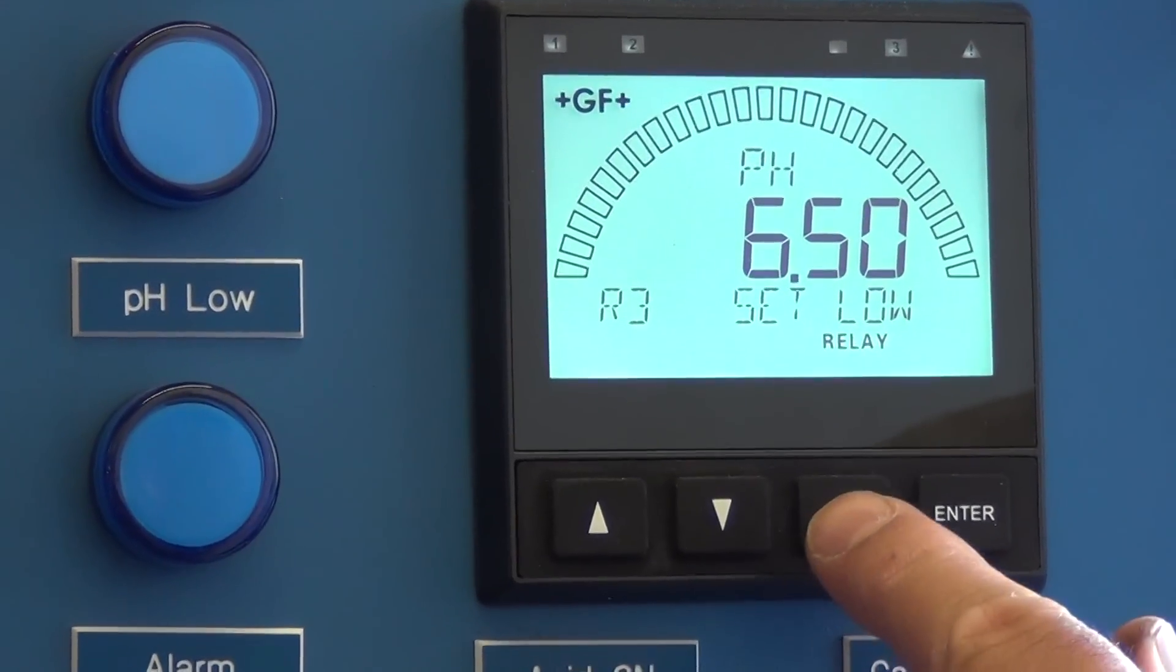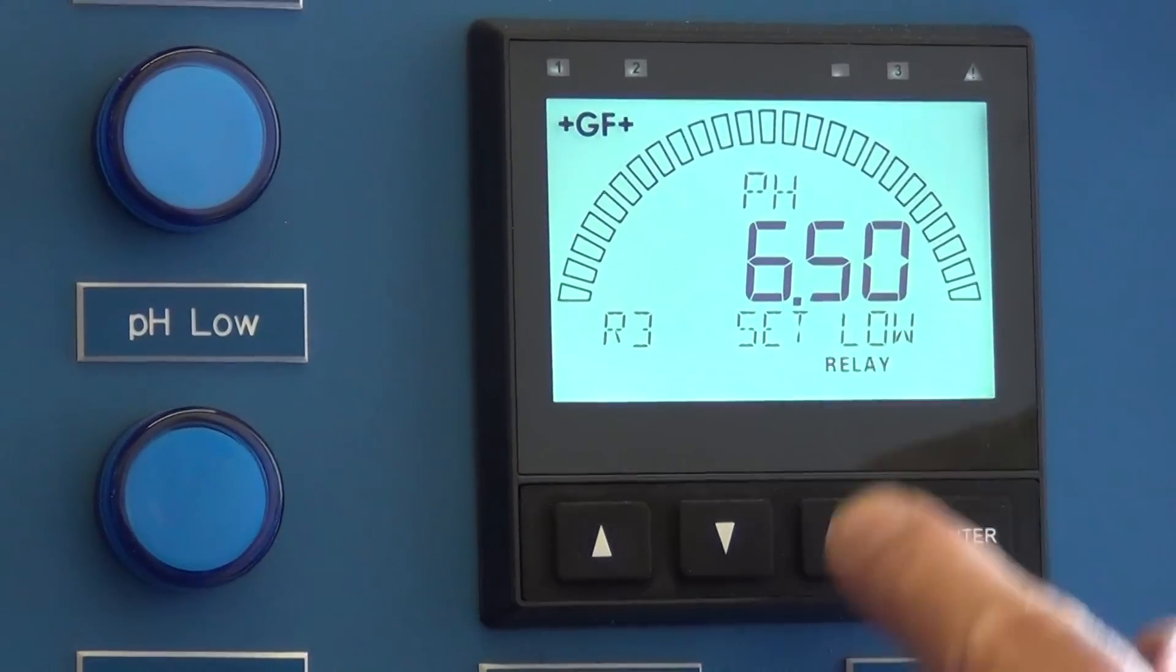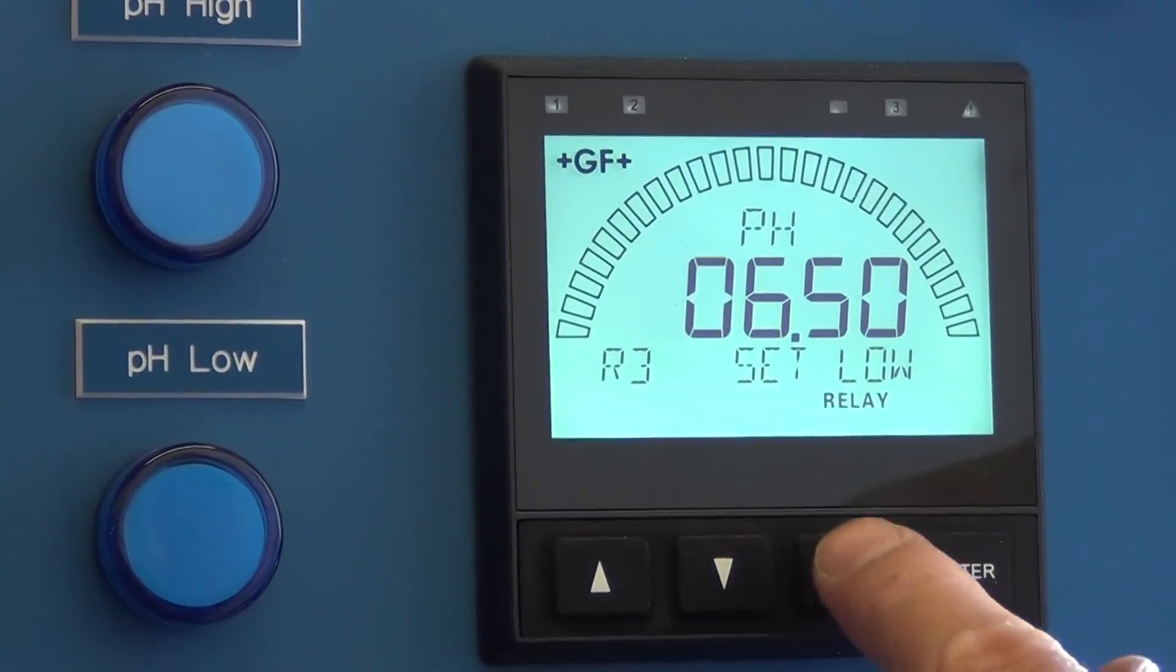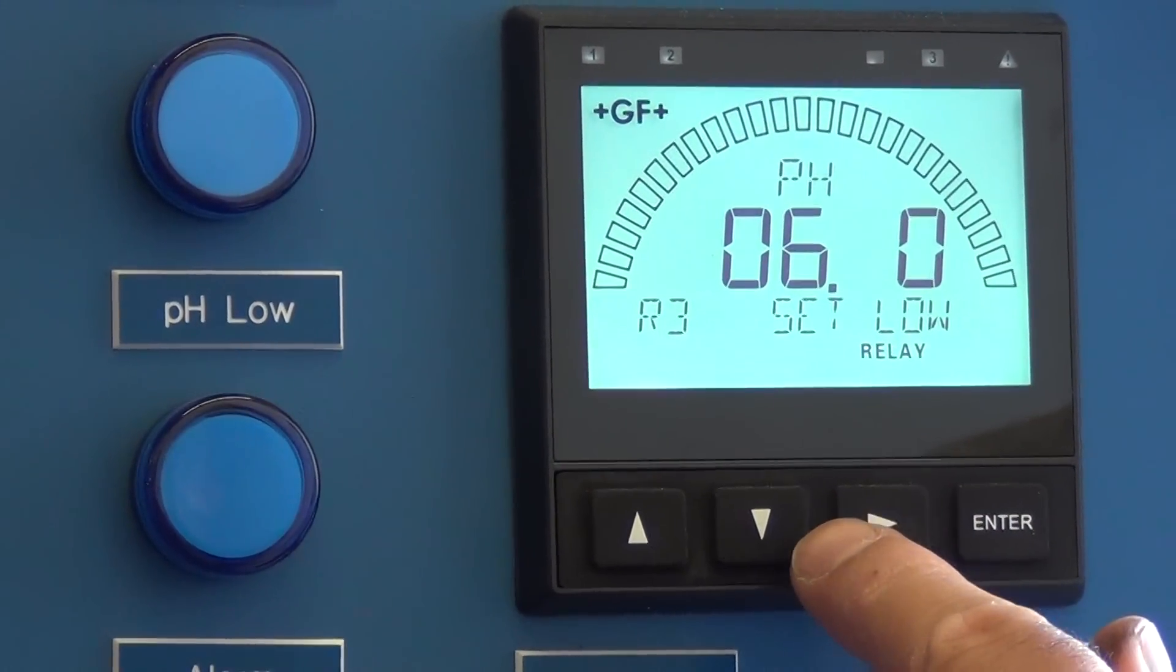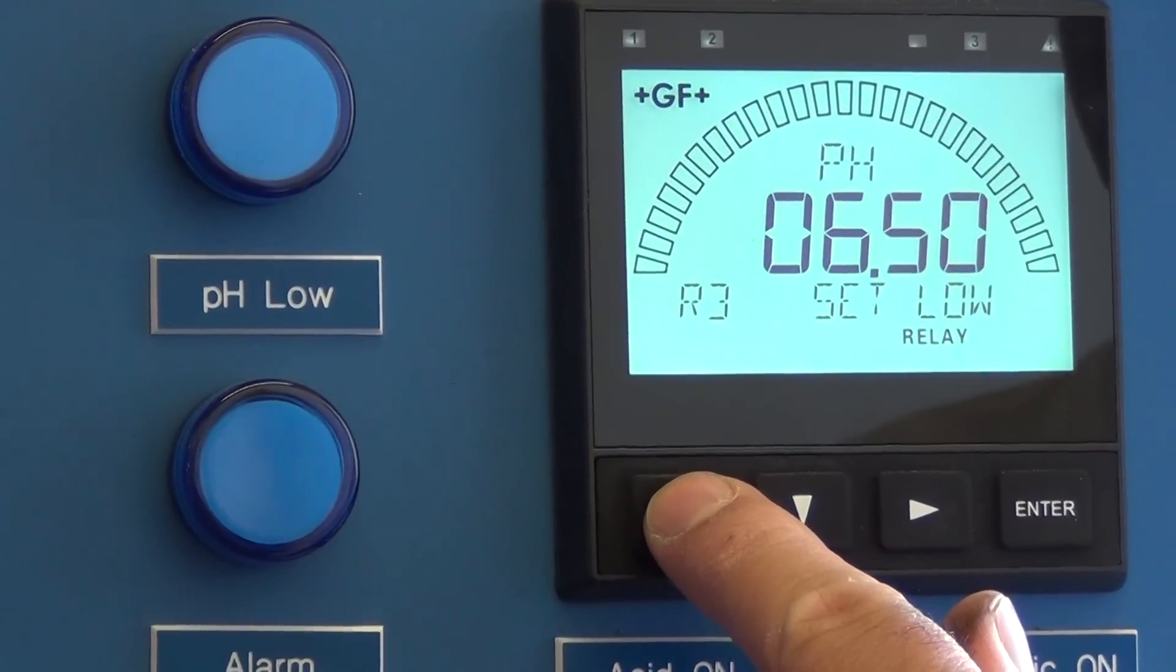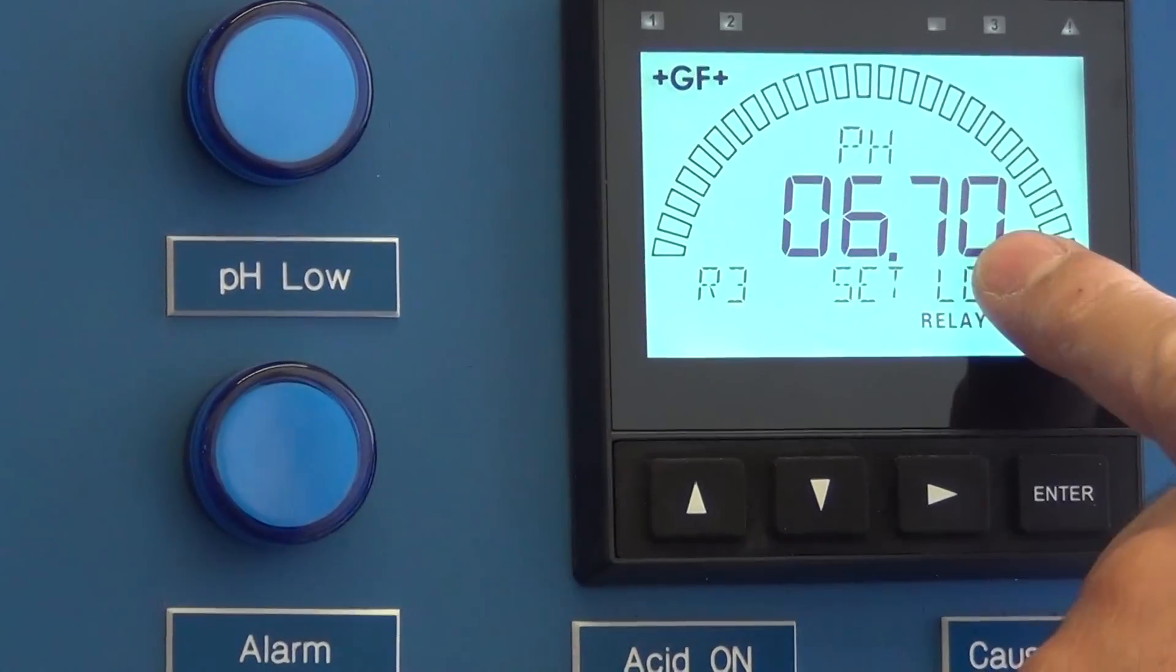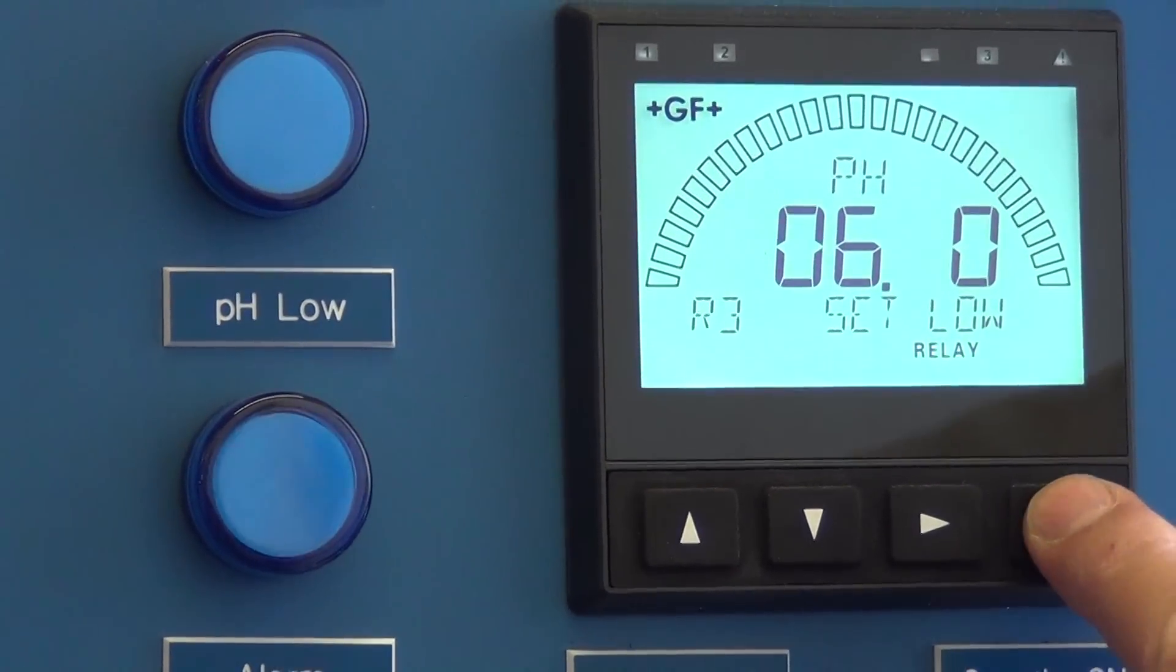Go to the digit you want to set. Let's say we wanted the caustic pump to begin pumping if the pH falls below 6.7. Change it to 6.7, then hit enter.